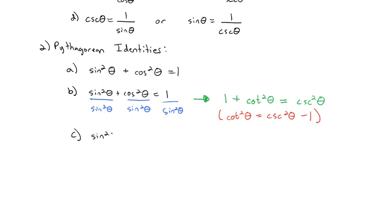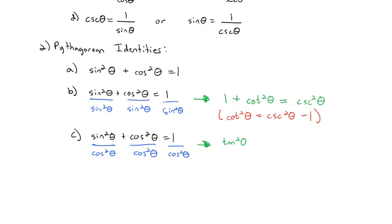The third Pythagorean identity is very similar. We start with sine squared plus cosine squared equals 1, but this time we divide by cosine squared of theta. Sine squared over cosine squared is tangent squared, plus 1, and the reciprocal of cosine squared is secant squared. So we get tangent squared plus 1 equals secant squared, and sometimes it's convenient to write tangent squared equals secant squared minus 1.